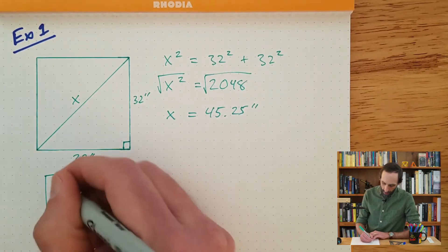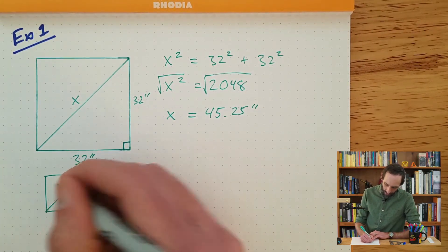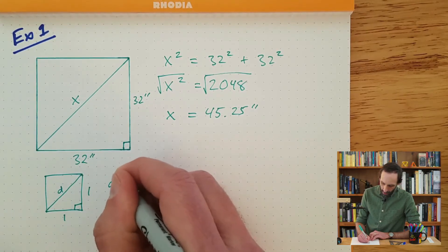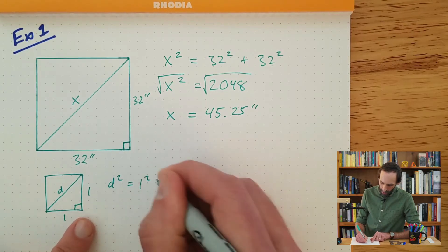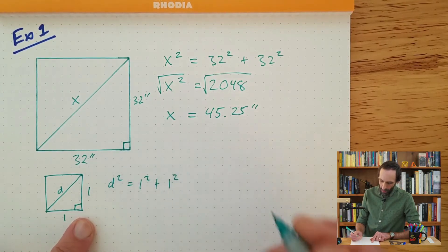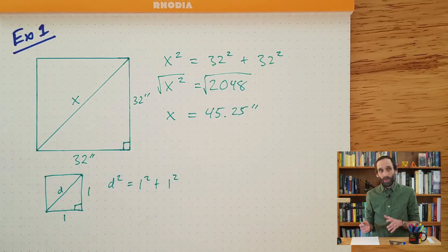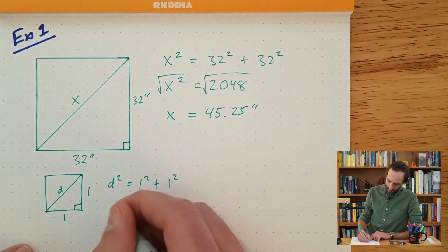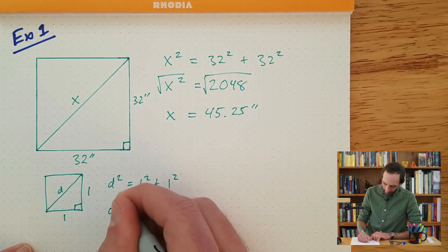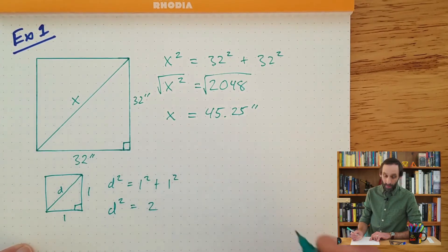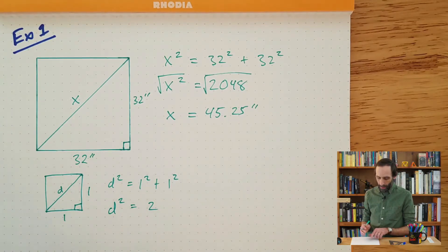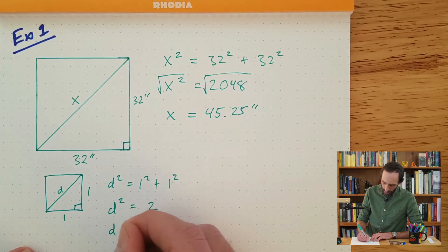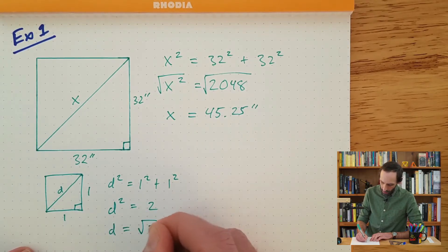According to the Pythagorean theorem, this diagonal — I'll just call it D — the square of the diagonal is equal to 1 squared plus 1 squared. Well, 1 squared plus 1 squared is 1 plus 1, because 1 squared is 1. And so this is 2. So the diagonal squared is equal to 2. Therefore, by taking the square root of both sides, the diagonal is equal to the square root of 2.